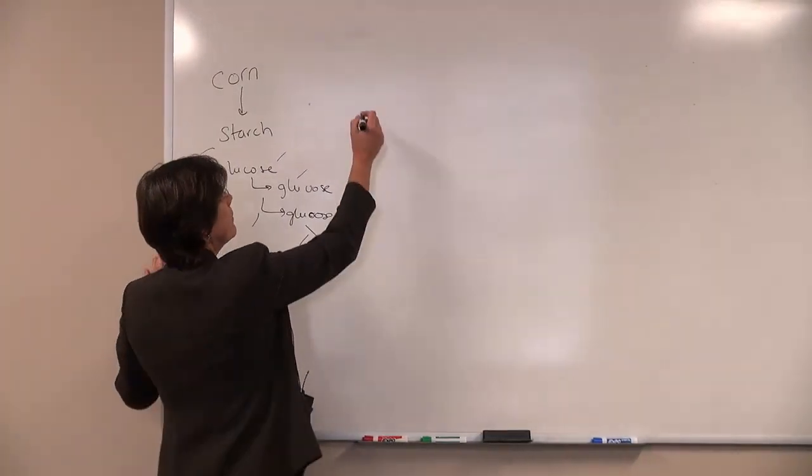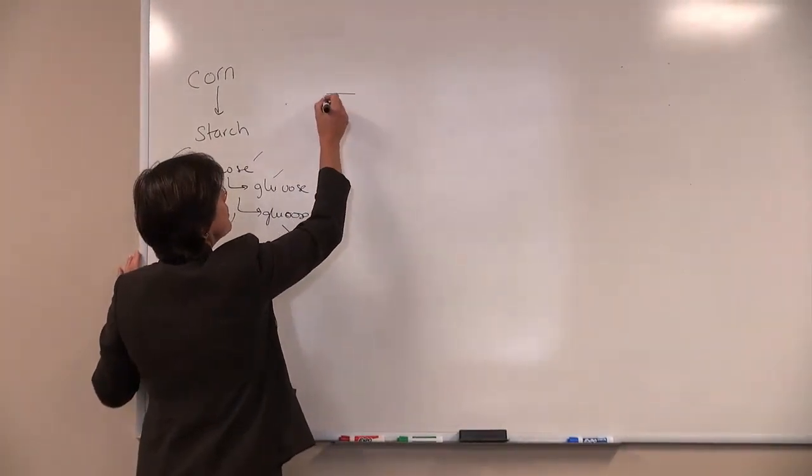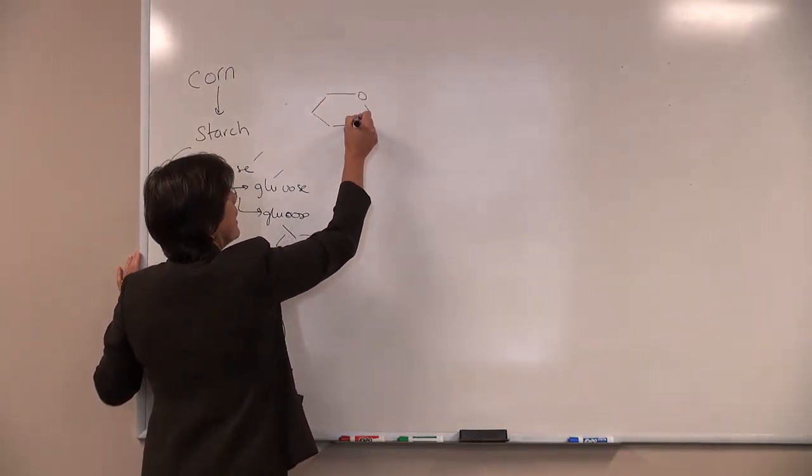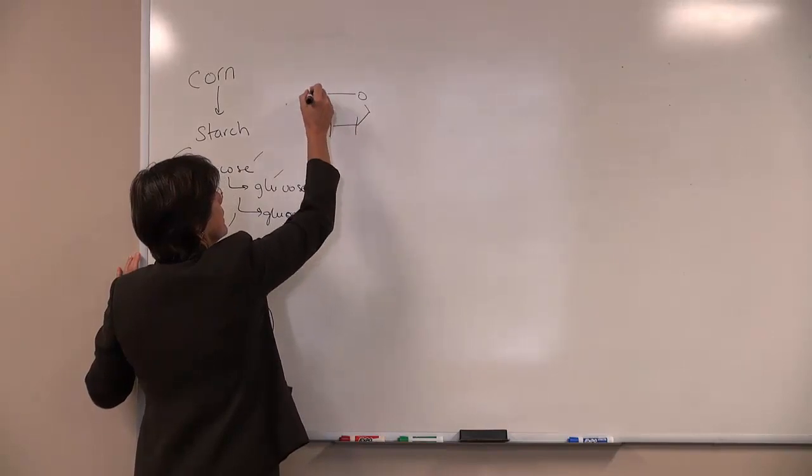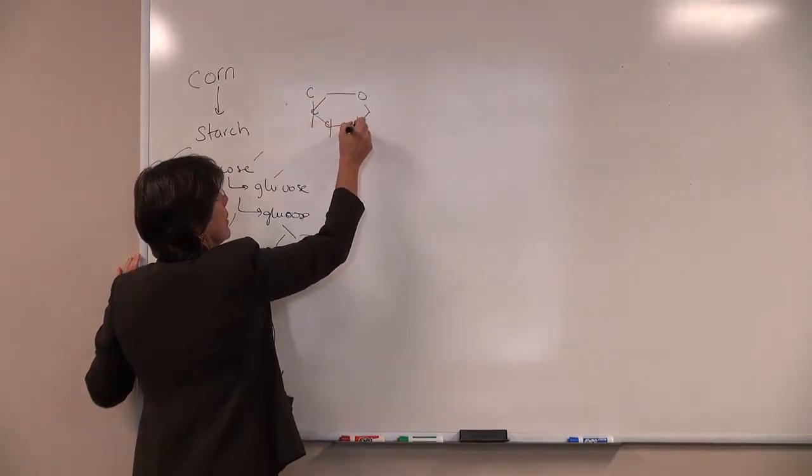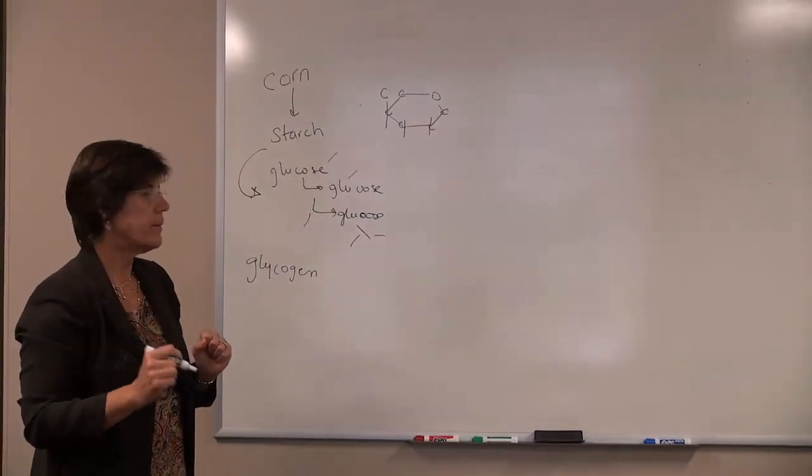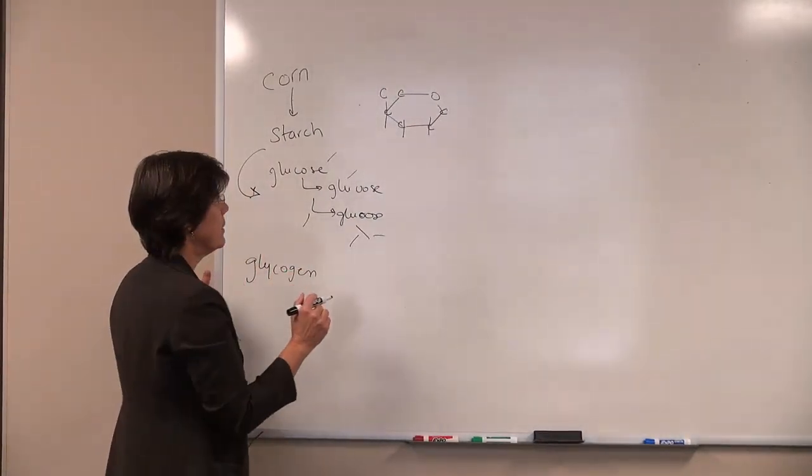Now to understand that we have to remember that glucose, or the molecule glucose, is comprised of six carbons linked together in a six-membered ring. So that's what glucose looks like in structure.